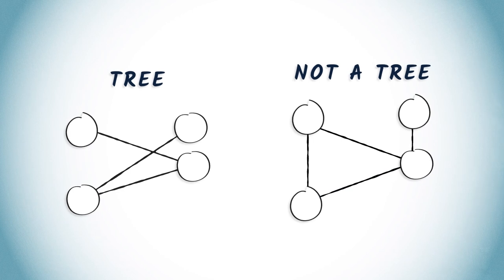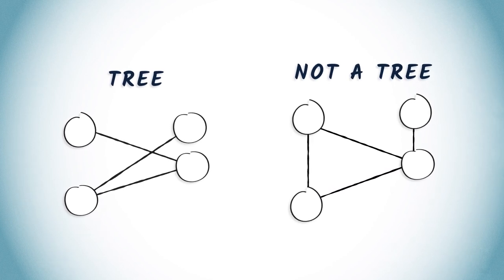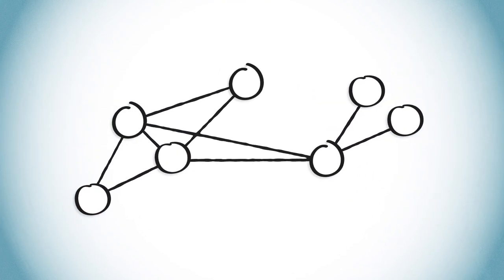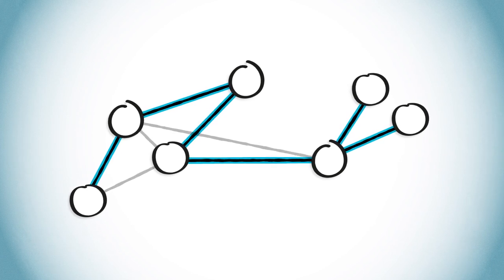Now, a spanning tree of a graph G is a tree obtained from G by removing some edges. To illustrate, consider the following graph. We can obtain a spanning tree by keeping only the following edges.